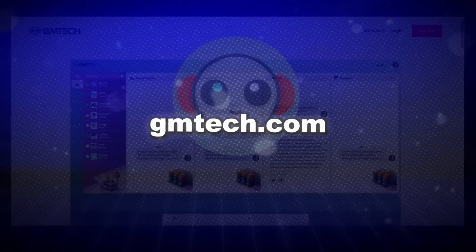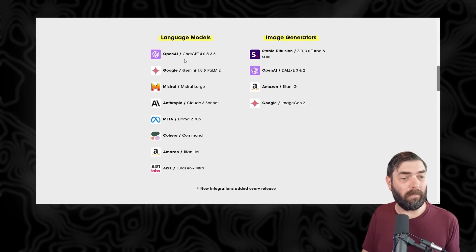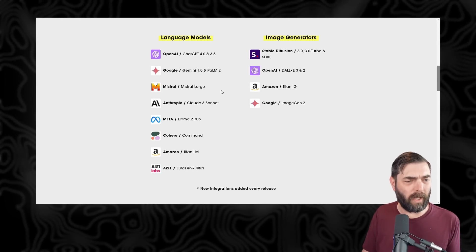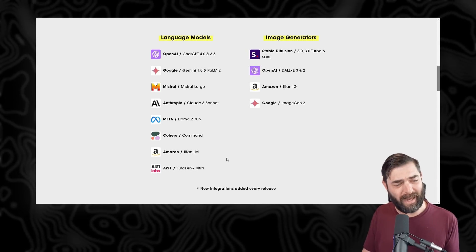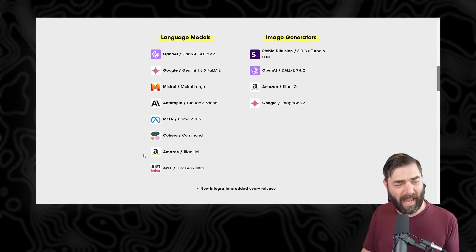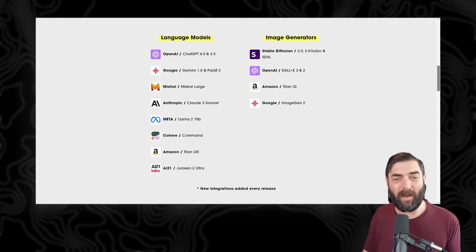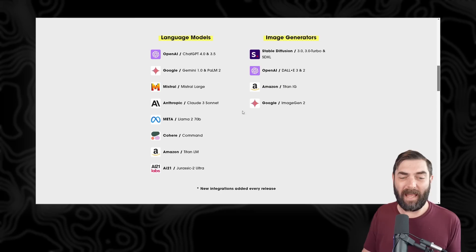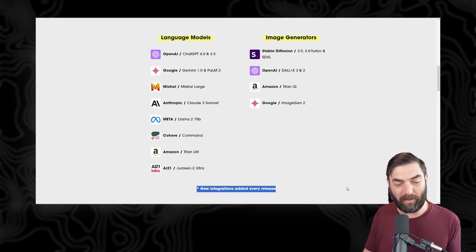You can find it over at gmtech.com. Right now it lets you compare OpenAI's models, Google's models, Mistral's models, Anthropic's, Meta, Cohere, Amazon, and AI21, as well as image generation models like Stable Diffusion, OpenAI, Amazon, and Google's — with new integrations adding all the time.